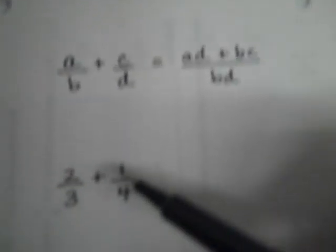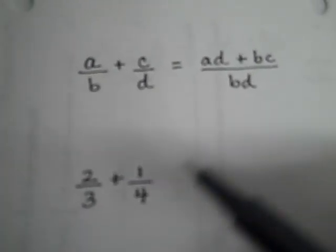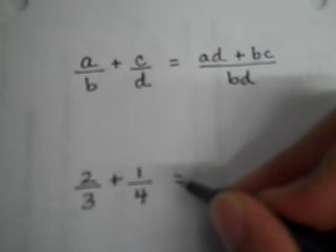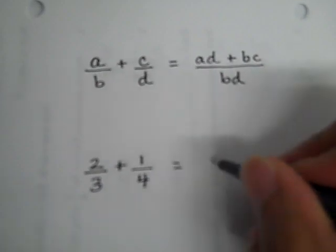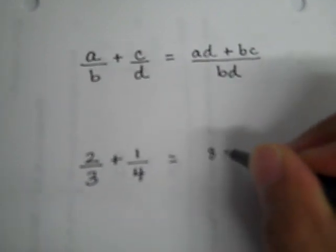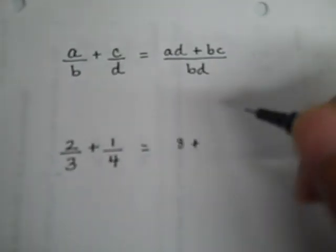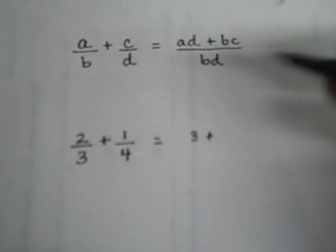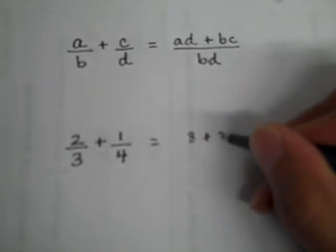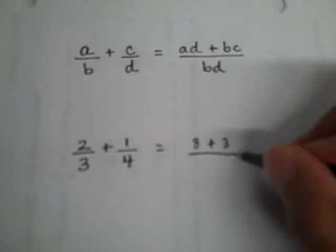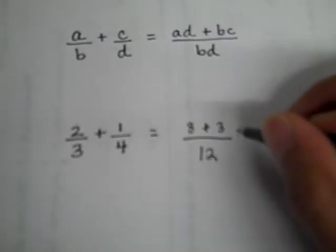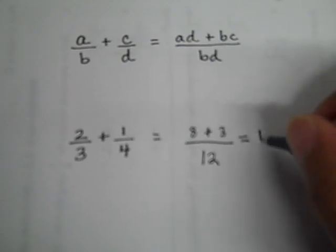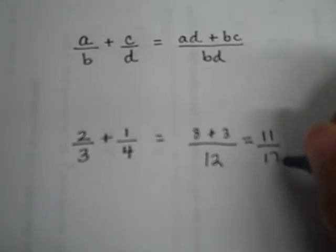So let's actually apply this rule to a special case, 2 thirds plus 1 fourth. I'll write my equal sign and I'll do A times D which is 2 times 4 in this case, that gives me 8. I'm going to write an addition sign and then I have 3 times 1 which is 3 all over 3 times 4 which is 12. And then I add 8 plus 3 is 11 all over 12.